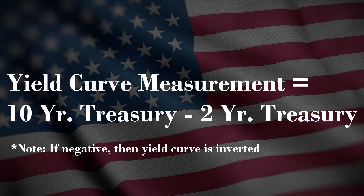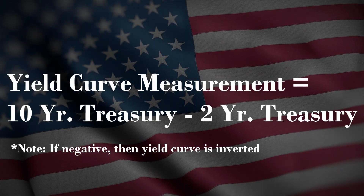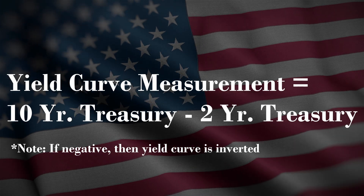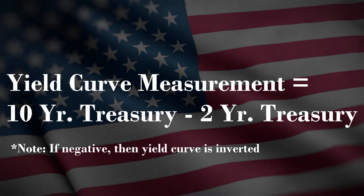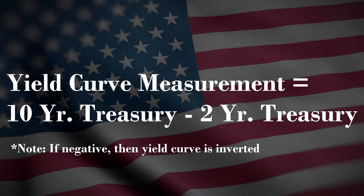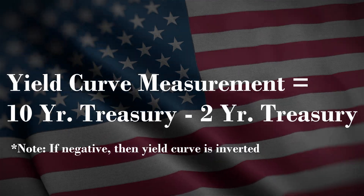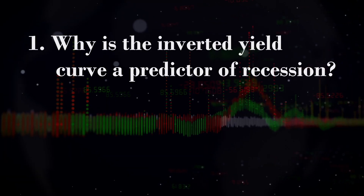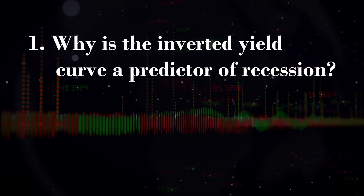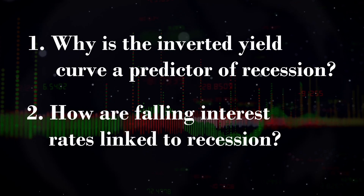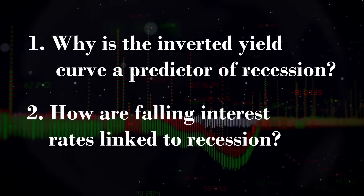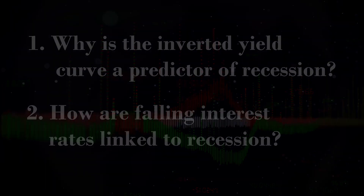The most common way to measure the inverted yield curve is by taking the spread, or the difference, between the 10-year treasury and the two-year treasury. So why does this make the inverted yield curve a predictor of recession, and why are falling interest rates linked to recession?